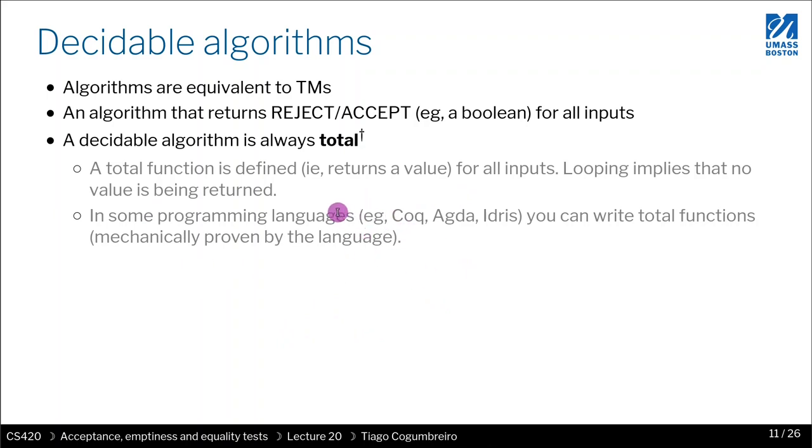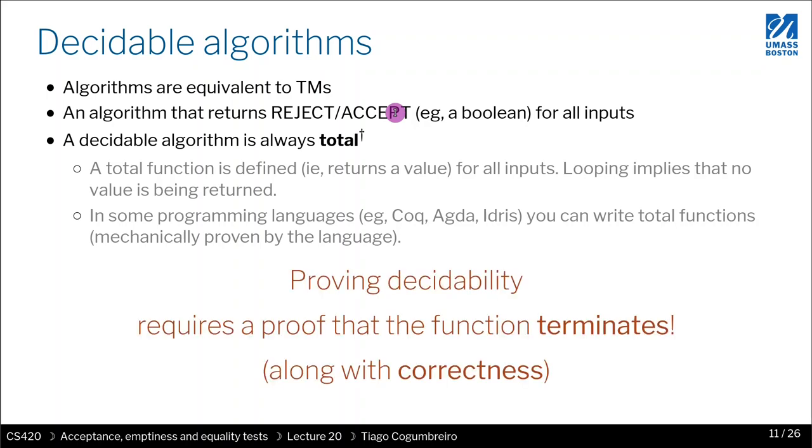As we've learned, Coq is actually a programming language. When you do a definition, the definitions have to be total. If you write any function in Coq, that function has to be total. You have to prove that it terminates. By definition, any function you write in Coq that is a Boolean would be a decidable algorithm. A very easy way to prove that an algorithm terminates is just write it in Coq. Then it is decidable.